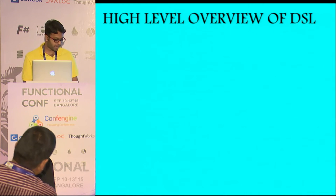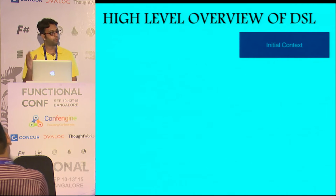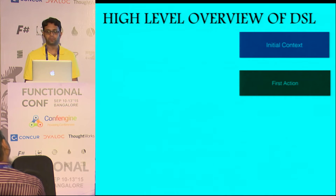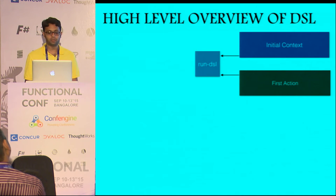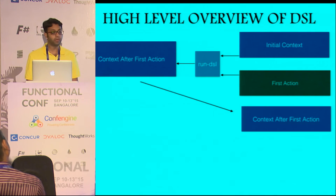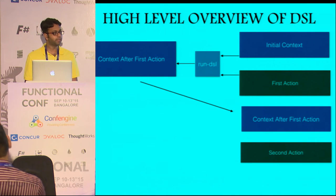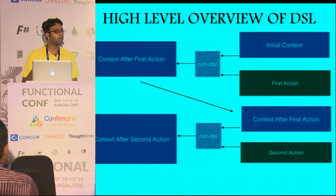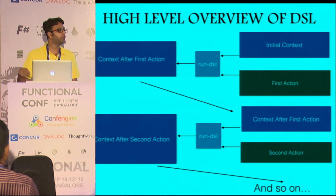Let's have a high-level overview of the DSL. We'll start with an initial context, take the first action, pass it to run DSL, then get an updated context with updated environment, updated log, and updated simulated state. Then pass it back again to run DSL with the second action, get another updated context after the second action, and so on until you are exhausted with all the actions.